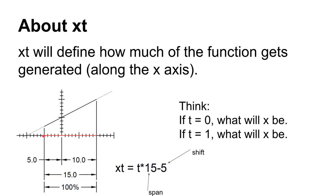Walking through this: as NX iterates, t starts at 0, so 0 times 15 is 0, subtract 5 gives negative 5 — our starting x value. At its maximum, t equals 1, so 1 times 15 is 15, minus 5 is positive 10 — our ending x value. Just remember: the first number is the span (width of domain) and the second number is the shift.